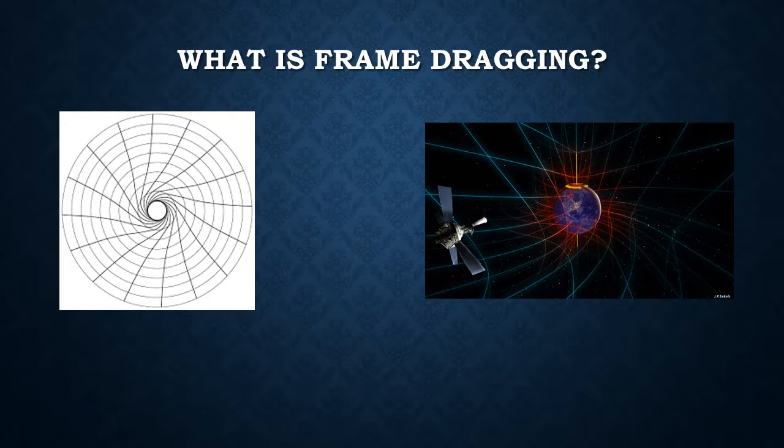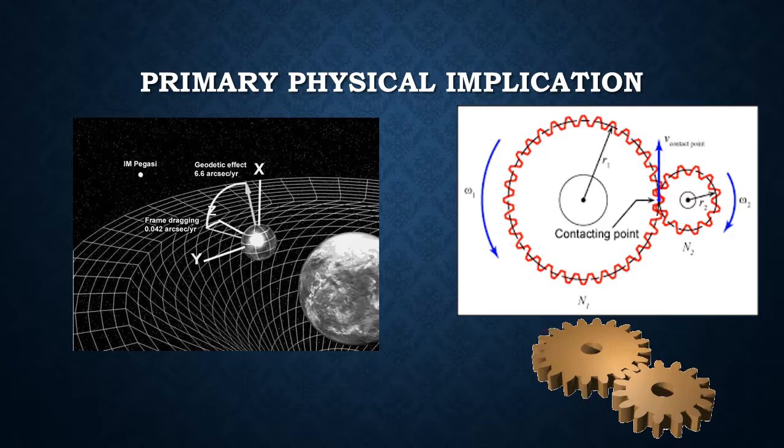This is very similar to what you would see if you could physically view the frame dragging effect on space-time. What should you take away from this? The amount of warping space depends on the angular velocity of the rotating object, the mass of the object, and the distance of the orbiting object from the center of mass.